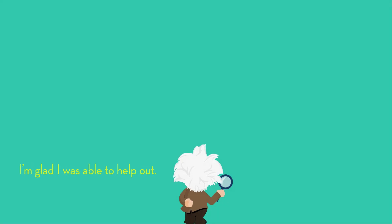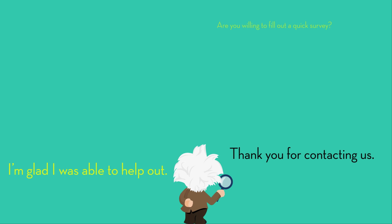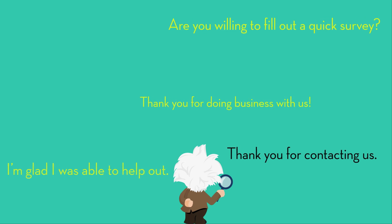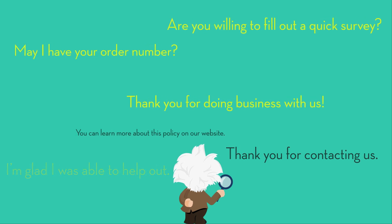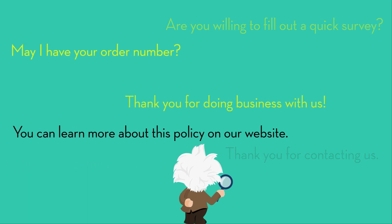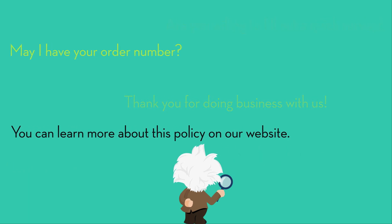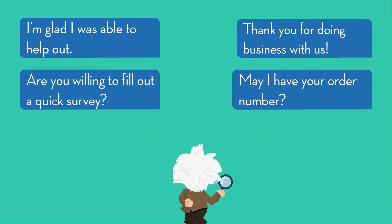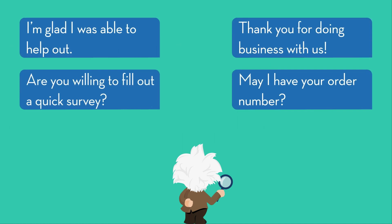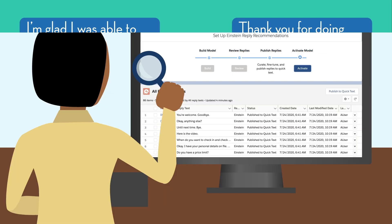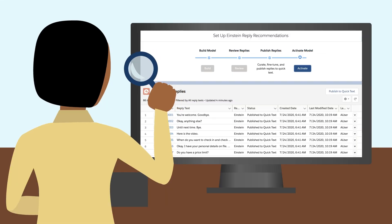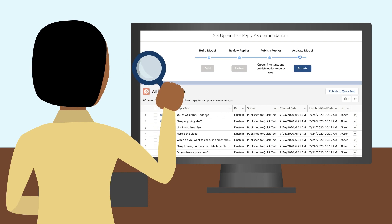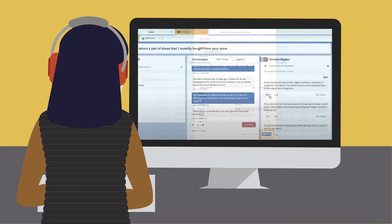So where do these replies come from? First, Einstein analyzes your past chats for language patterns. Then, Einstein generates a list of the top replies used by your support team. The admin reviews the replies, fine-tunes them, and publishes them to Quick Text so they can be recommended to agents.